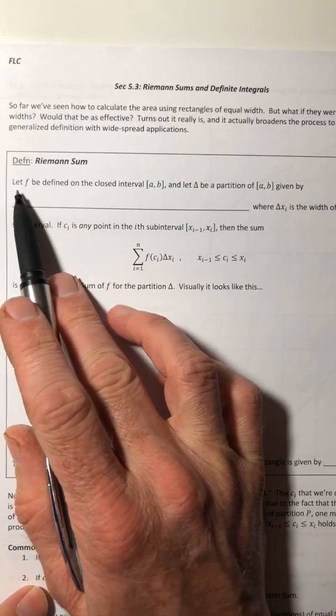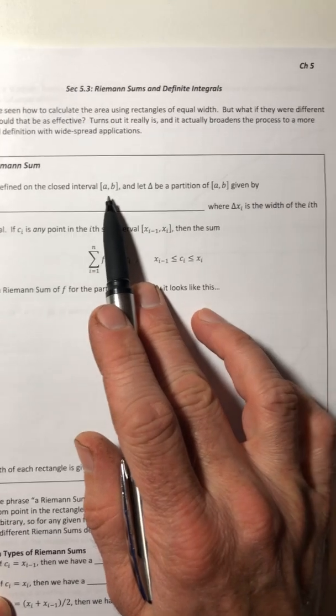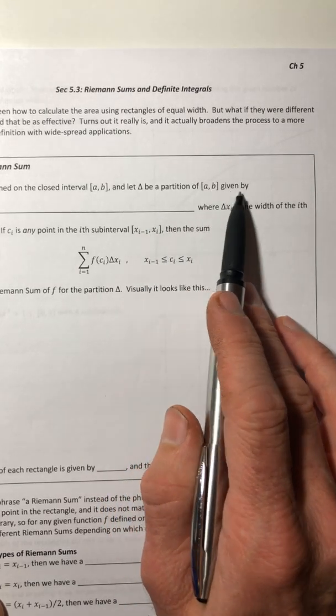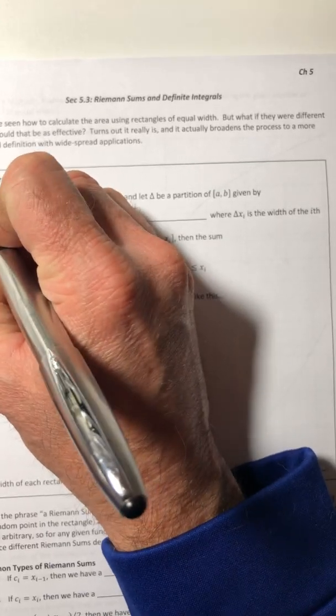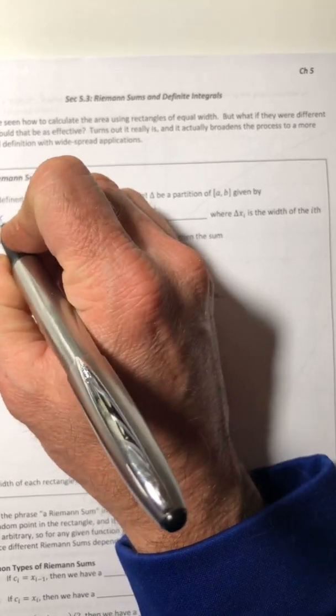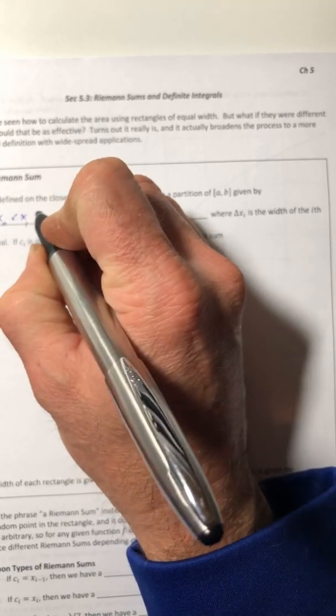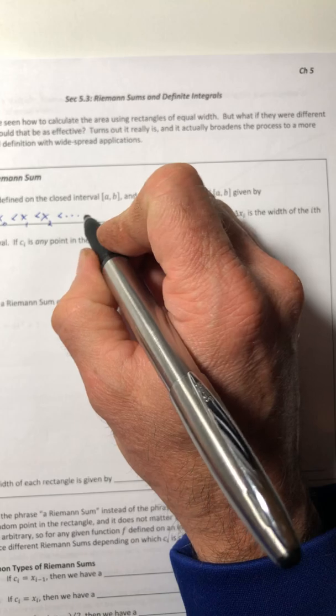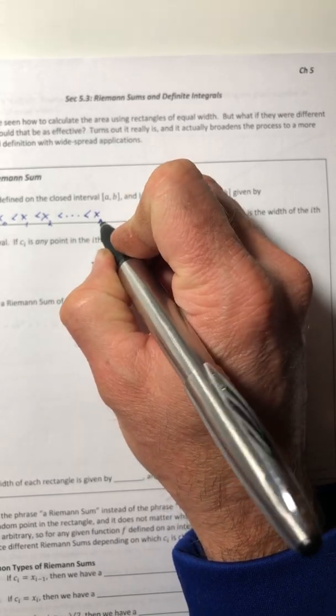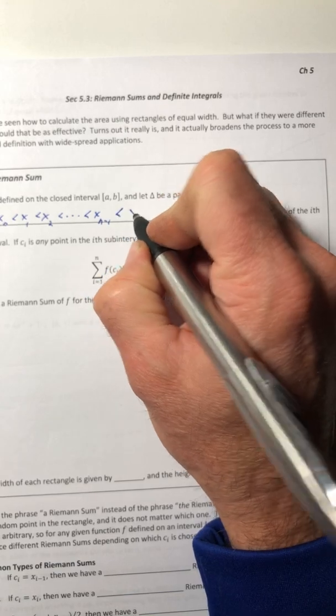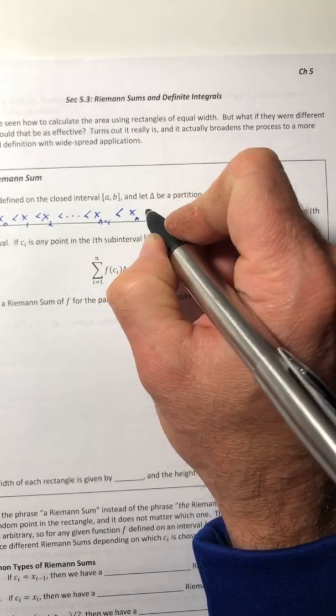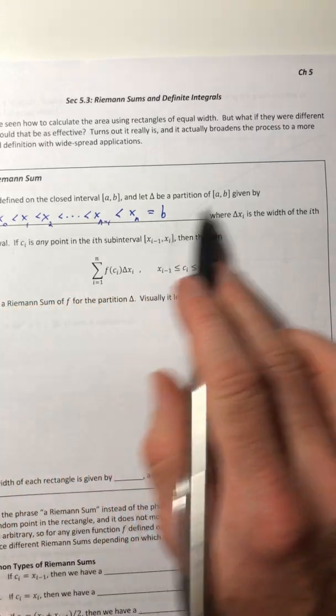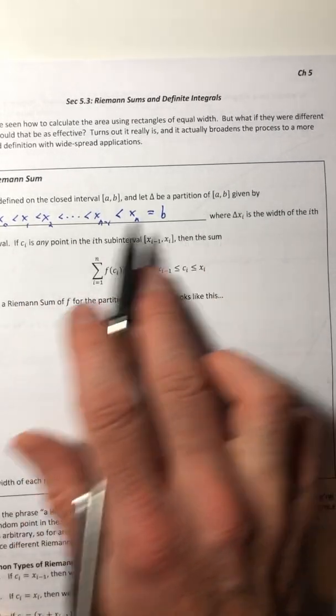So we're going to let f be a function defined on the closed interval from a to b and we're going to let delta, not delta x, just delta, be a partition of that interval given by: we're going to let a equal x sub zero and that will be less than x sub one which is less than x sub two which is less than all the way up to less than x sub n minus one which is less than x sub n and that x sub n is going to be the b from the interval. So it starts with a and goes all the way up to b. So we're taking this interval and we're dividing it up into partitions or into sections.